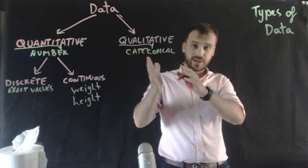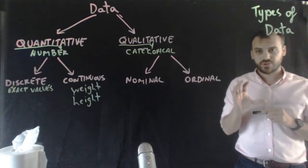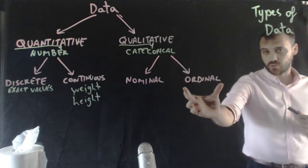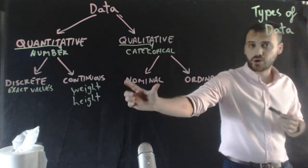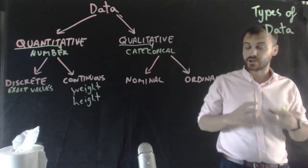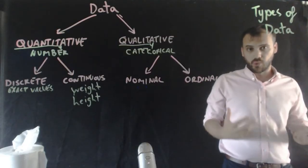So we've got categorical data, but we've got two distinct groups of categorical data. All right, so the two distinct groups we have are nominal and ordinal. Now, nominal categorical data is probably what you think about when you think about categorical data. It means that it has no order.